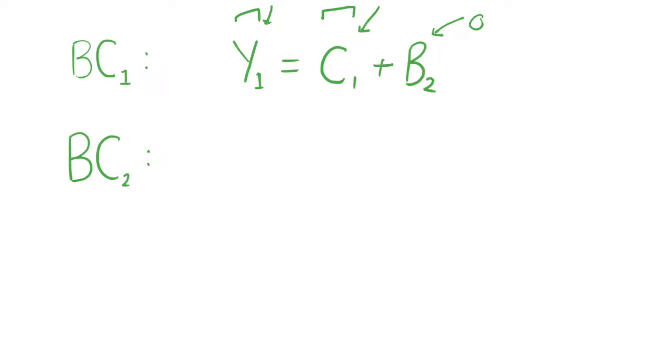So that's how we understand that and in period two we again have income but it's now period two income so we call it Y2 plus the borrowing and saving from the period prior, period one, but we multiply this by one plus R because we have to pay an interest rate on this. So if we borrow in period one we have to pay that back in period two at an interest rate of R, and if we save in period one we then have that as extra income to spend in period two and we gain interest R on that, and this expression is equal to consumption in period two.